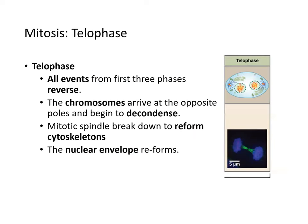In telophase, all events from the first three phases reverse: chromosomes arrive at opposite poles and begin to decondense, the mitotic spindle breaks down to reform the cytoskeleton, and the nuclear envelope reforms.